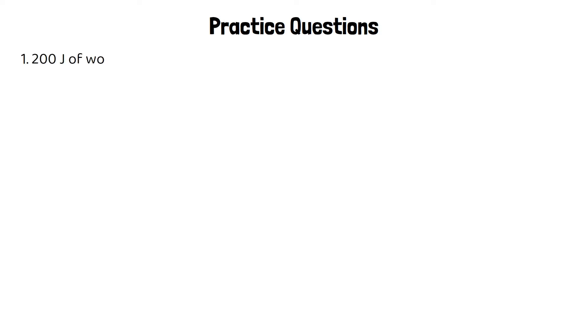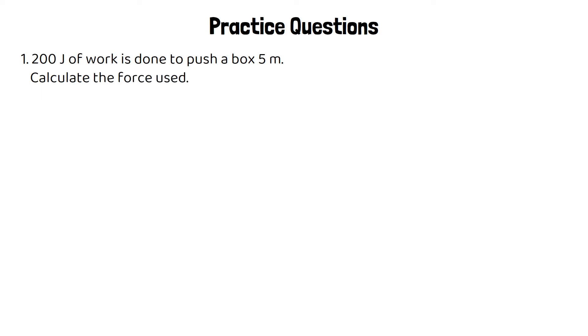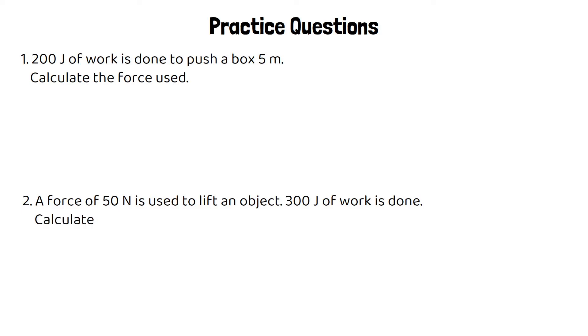Here are a couple of practice questions where you need to rearrange after substituting. First: 200 joules of work is done to push a box 5 meters — calculate the force used. Second: a force of 50 newtons is used to lift an object, and 300 joules of work is done — calculate the distance the object was lifted. Pause the video now and have a go at these questions.